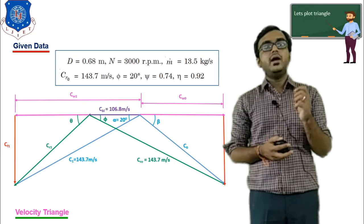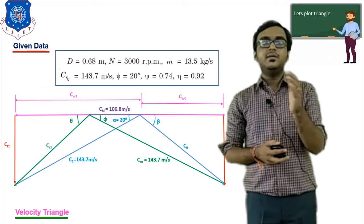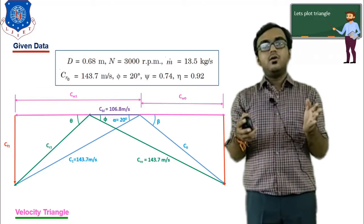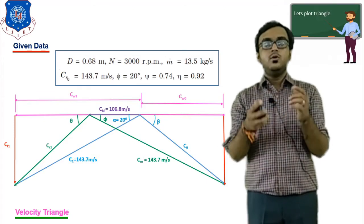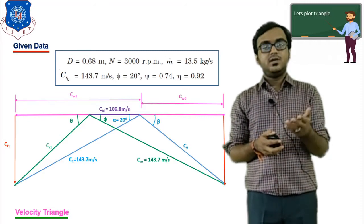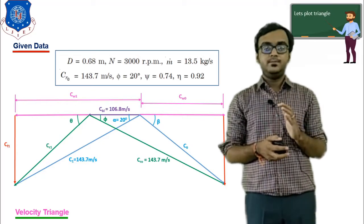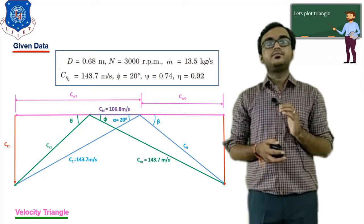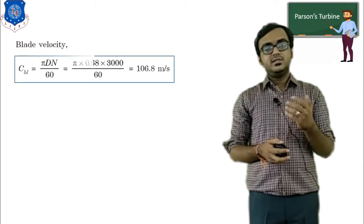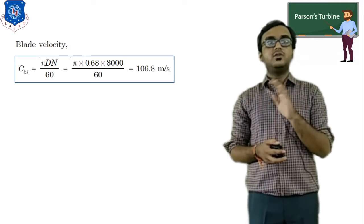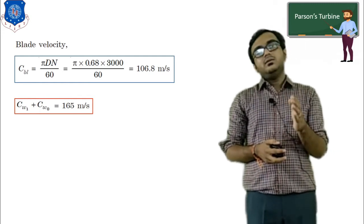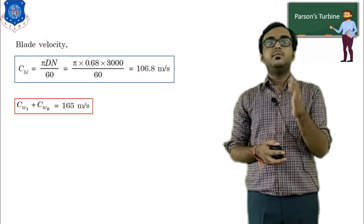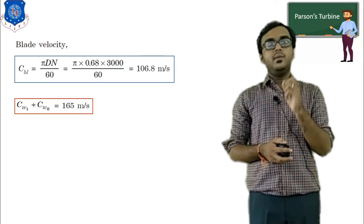From the plotted triangle, we identify the total horizontal distance representing (Cw1 + Cwo). We measure it and convert using our scale. For example, if the total horizontal line length is 100 mm, convert to m/s as per the scale. From my scale, the magnitude of (Cw1 + Cwo) is equal to 165 m/s.